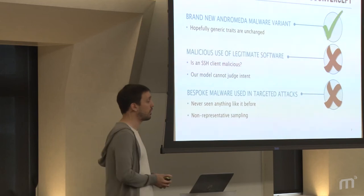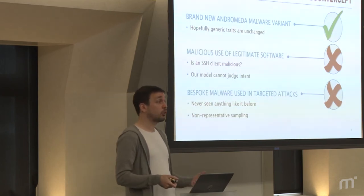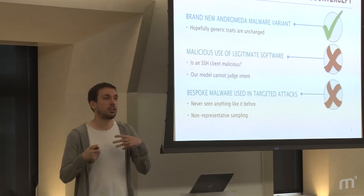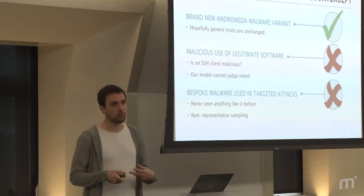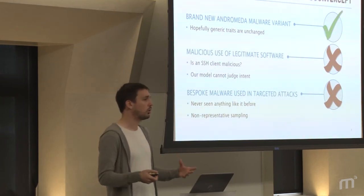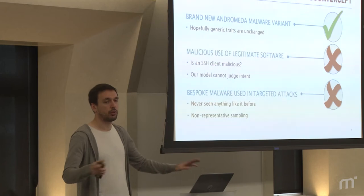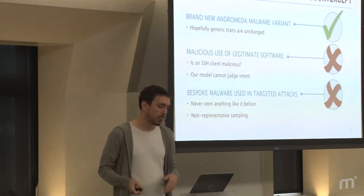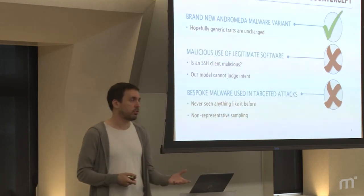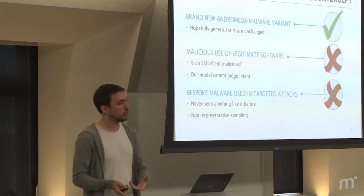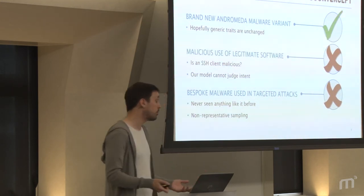For example, bespoke malware used in targeted attacks. The idea here is that it might be anomalous compared to what we've seen before. But the idea is we probably have never seen anything like it before because someone has custom-made this to hit a target. And they're trying to make sure no one gets their hands on it, which is very different to your sort of common banking trojans and Bitcoin miners and other sorts of malware that go around that are just spread widely. Our model will have never seen anything like it, so it's kind of non-representative sampling here.